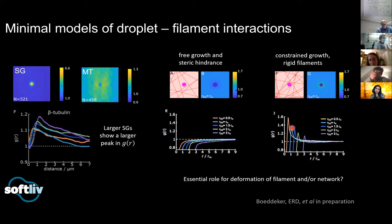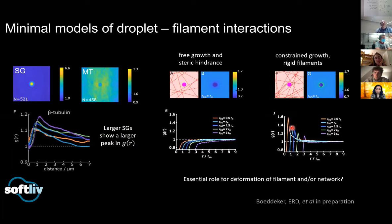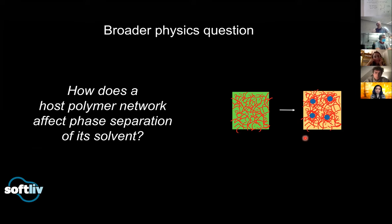What Tom and I are working on now is figuring out whether there must be some deformation of the microtubules — is it a bendo-capillary interaction where microtubules wrap around the droplet, or could it be that as the droplet grows it deforms the network of microtubules? These are the questions we're asking. This work in progress inspired what I thought were really cool fundamental polymer physics questions I hadn't seen addressed in the literature: how does a host polymer network affect the phase separation of its solvent? In the cell case, the solvent was the cytoplasm and the polymer network was the microtubules.